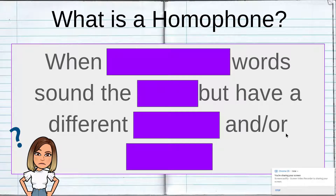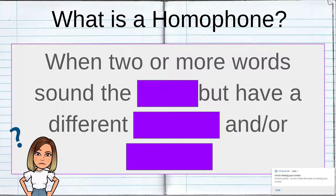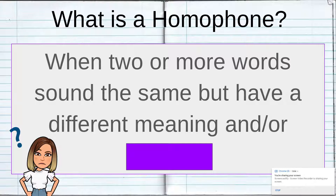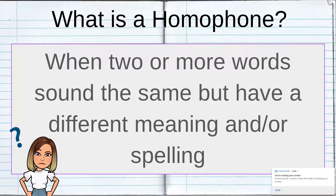All right, this one's our most challenging. We've got a lot of words missing from our definition of homophones. So let's see if you can remember it. When blank or blank words sound the blank, but have a different blank and or blank. When two or more words sound the same but have a different meaning and or spelling. So a homophone is any two or more words that sound the same but mean something different.